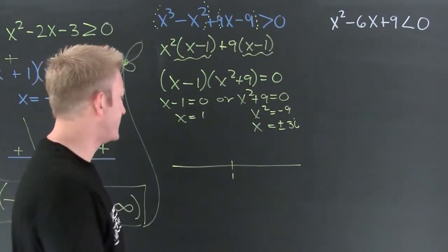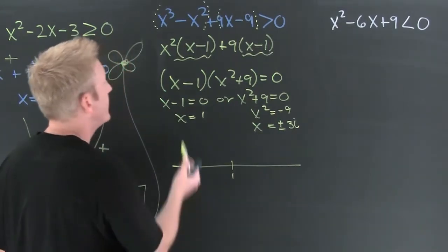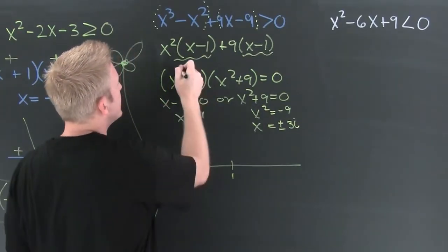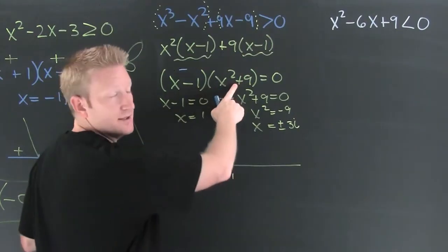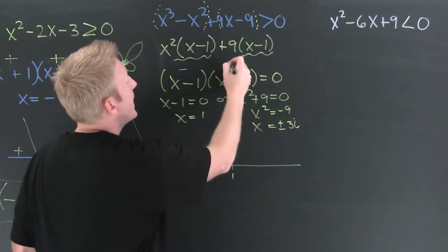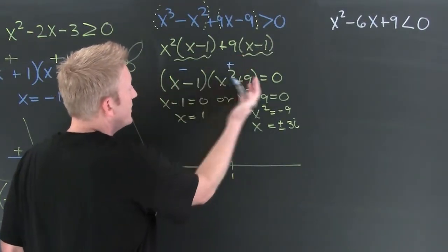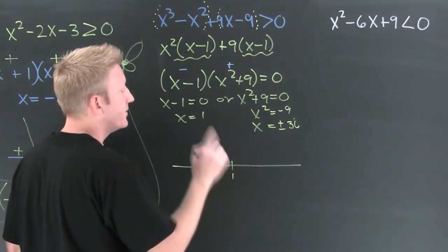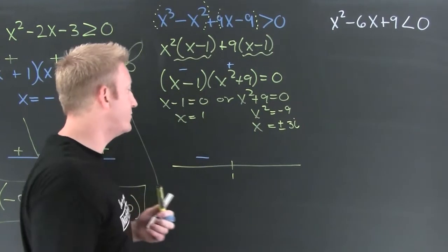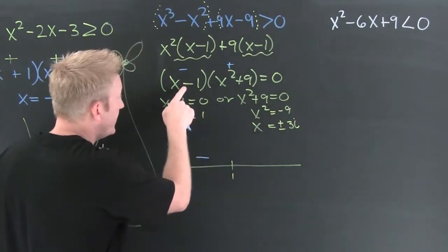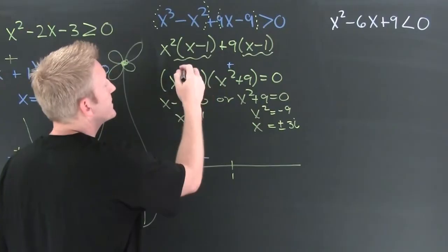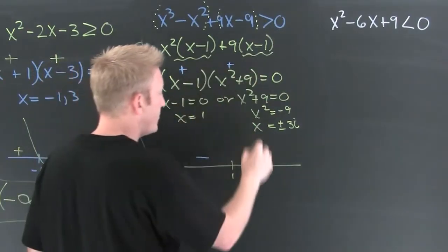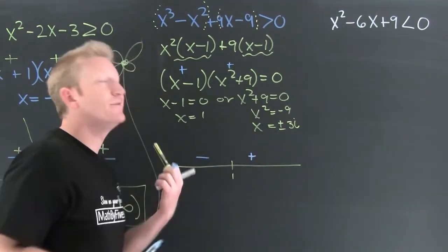Test the number left of one. How about zero? Zero makes this one positive or it makes this one negative? Zero makes this one negative. Everything is going to be positive in here, so that one's always positive. So a negative times a positive is going to make this negative. Now to the right of one, how about ten? So we put ten up in here. That's going to be positive. We put ten here, always positive. Positive and positive are positive.